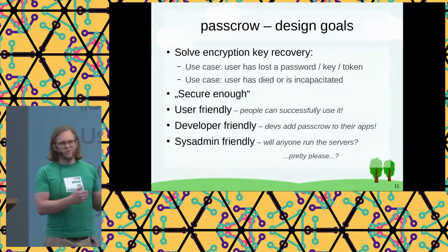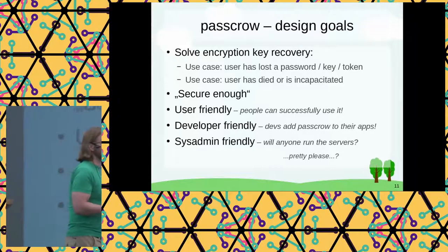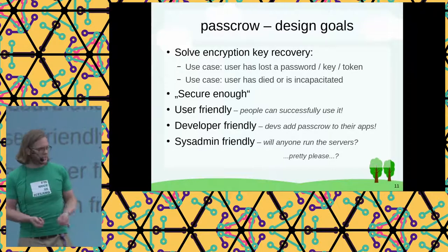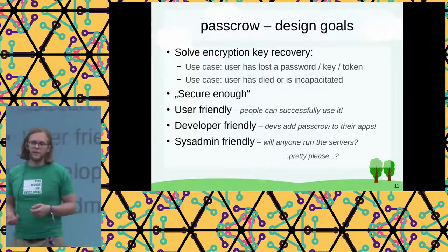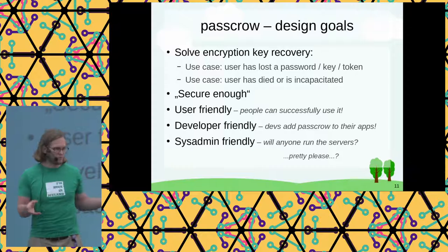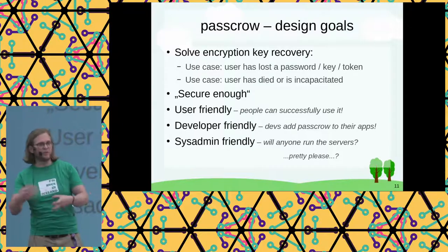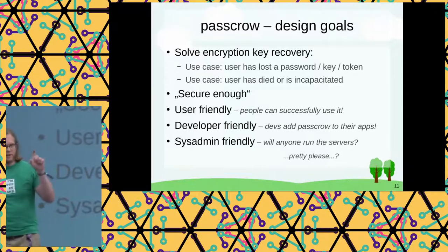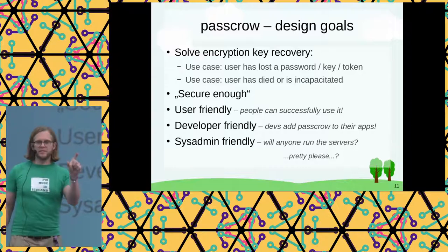The design goals I had: I want to solve this problem, I want us to be able to recover a lost encryption key. Although the title of the talk is passwords, those boil down to the same thing — usually a password is converted into a key using a hashing function. There is ultimately a key that protects access to your stuff. And there can be chains of keys — a key that encrypts another key that encrypts another key. We can step in and say: this key, we're going to make this key recoverable.